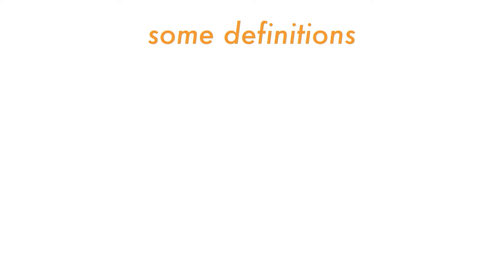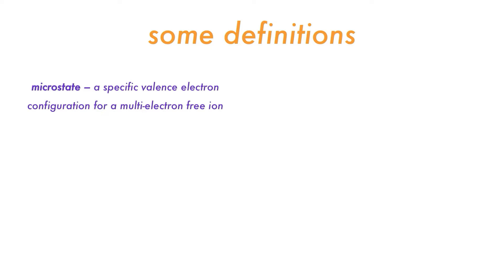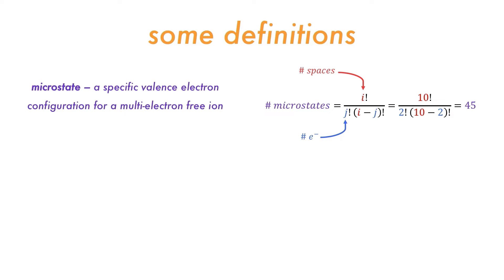Let's review some terms from last time. The first is microstate, which for us will be a specific valence electron configuration for a multi-valent free ion — for example, one electron spin up in dz² and one spin down in dx²-y². We can calculate the number of microstates for a specific electron count in a spherical ion. The number of microstates depends on the number of spaces; for d orbitals this will be 10 spaces. J is the number of electrons, so for 10 spaces and 2 electrons we will have 45 different microstates, which is 2 electrons in 5 d orbitals.